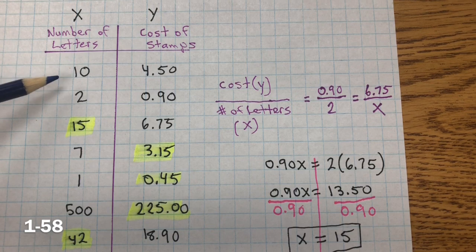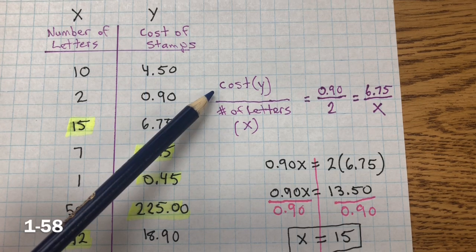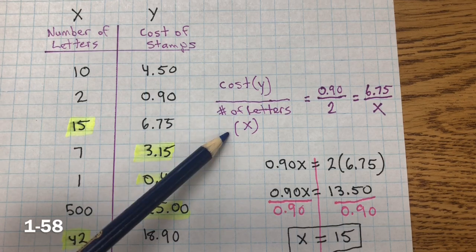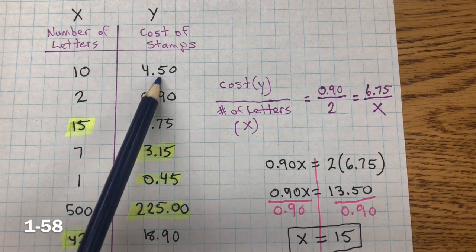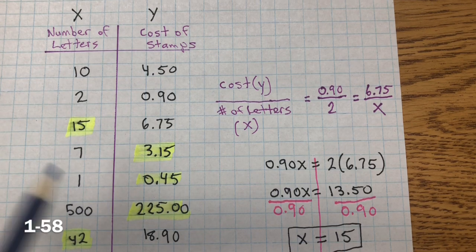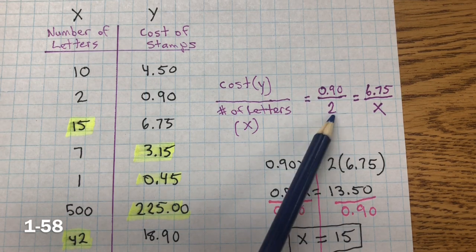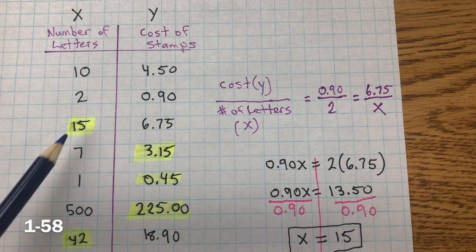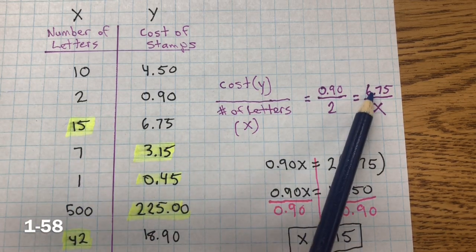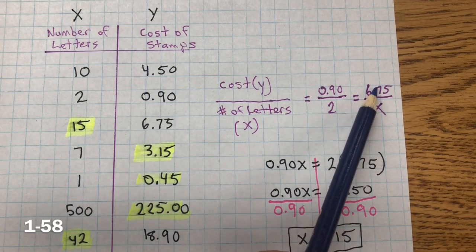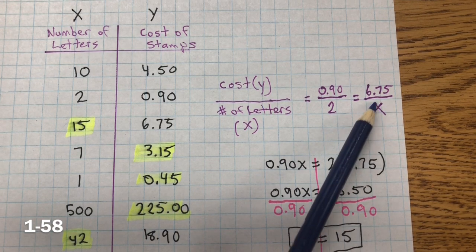Well, one way is to set it up as a proportional relationship. So, we have cost of the stamps and the number of the letters. So, y over x. And I can use any of the given values. So, we have 4, 50, and 10, 90 cents, and 2. So, we can use either of those. And I chose 90 cents as the cost for two stamps. And then, we were trying to find one of these missing values for x or y. And I chose this one right here. And so, I have the cost of the stamps, which was $6.75. But, we were trying to find this value. And I didn't know. So, I gave it the variable x. It's an unknown.